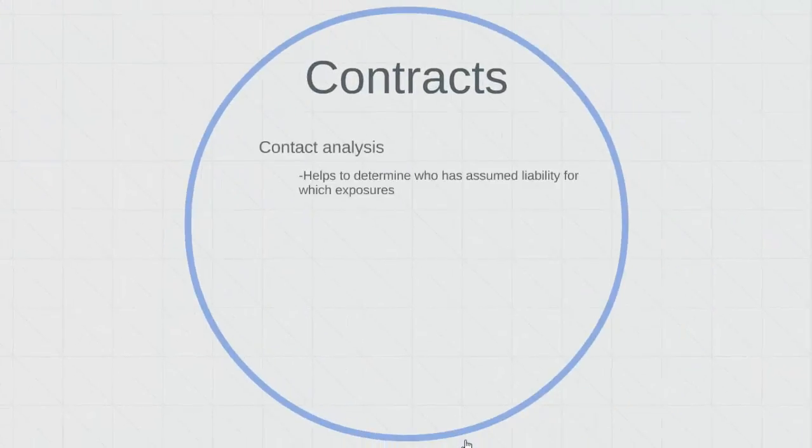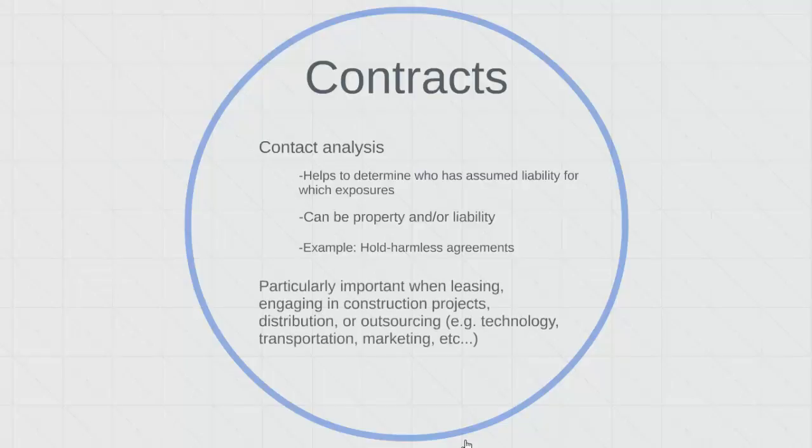Now let's look at contracts. Contract analysis helps to determine who has assumed liability for which exposures, and it can also be used for property exposures. Entering into a contract can increase or reduce an organization's property and liability loss exposures. When an organization purchases property, that obviously increases their asset exposure. But a hold harmless agreement might increase or reduce liability exposures depending on how the hold harmless agreement is written. We'll discuss more about hold harmless agreements in Chapter 4, which is Risk Financing. Contract analysis is particularly important for organizations involved in leasing, engaging in construction projects, distribution, or outsourcing, such as technology, transportation, and marketing firms.